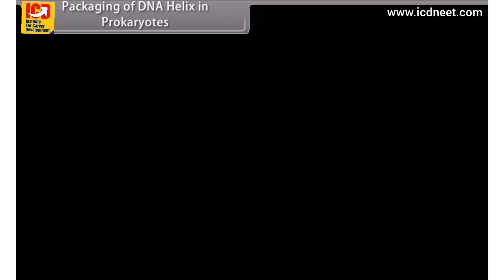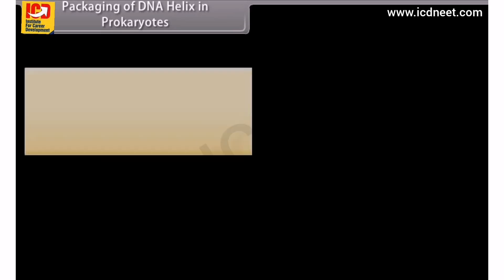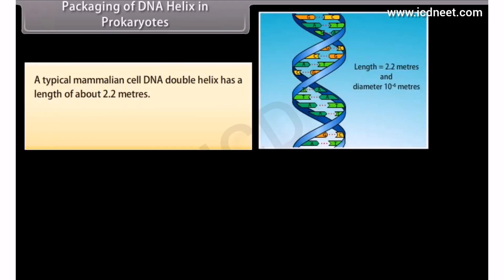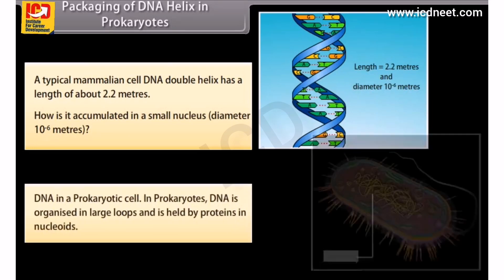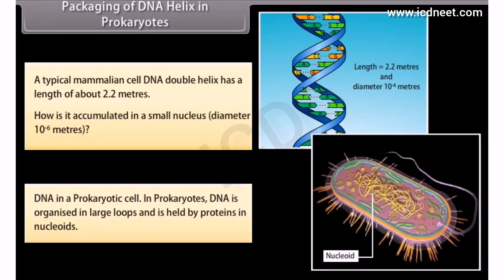Packaging of DNA Helix in Prokaryotes. A typical mammalian cell DNA double helix has a length of about 2.2 meters. How is it accumulated in a small nucleus? In prokaryotes, DNA is organized in large loops and is held by proteins in nucleoids.